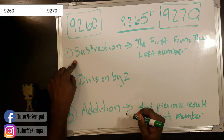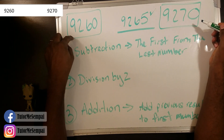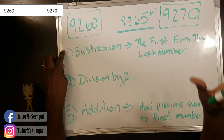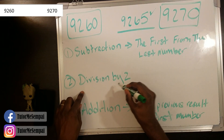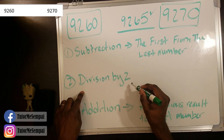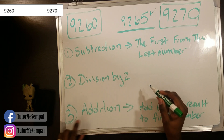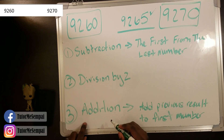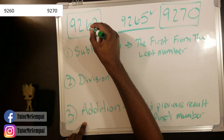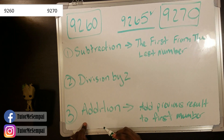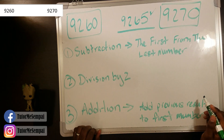First, subtraction — subtract the first number from the last number. Take that number and divide it by two. Take that number you get and add it to the first number. You do all of that, you get your answer.